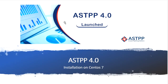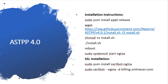Today I'm going to tell you about ASTTP installation on CentOS 7. For installing ASTTP 4.0 version on CentOS 7, you need to follow these instructions.